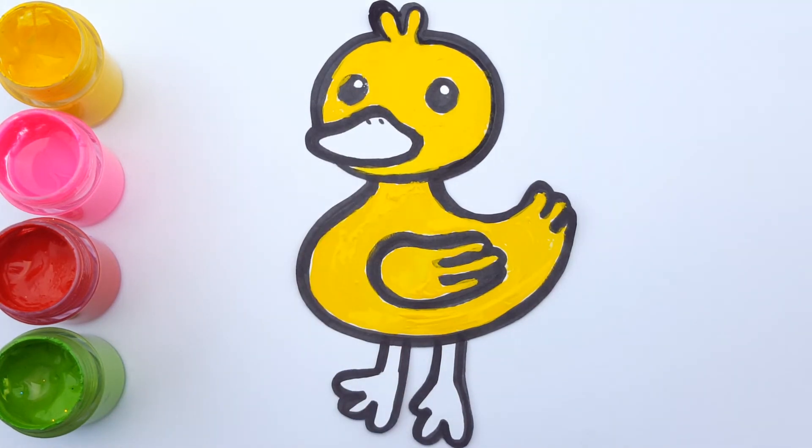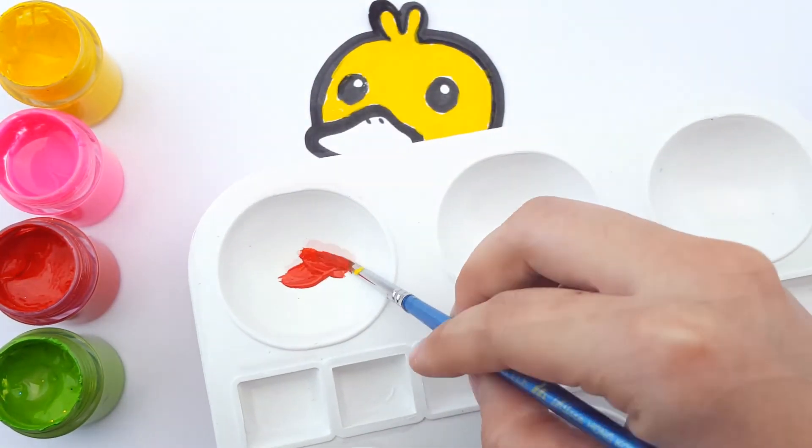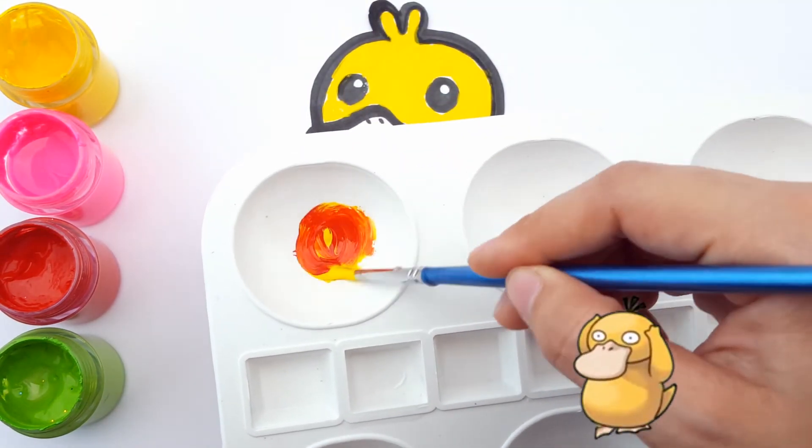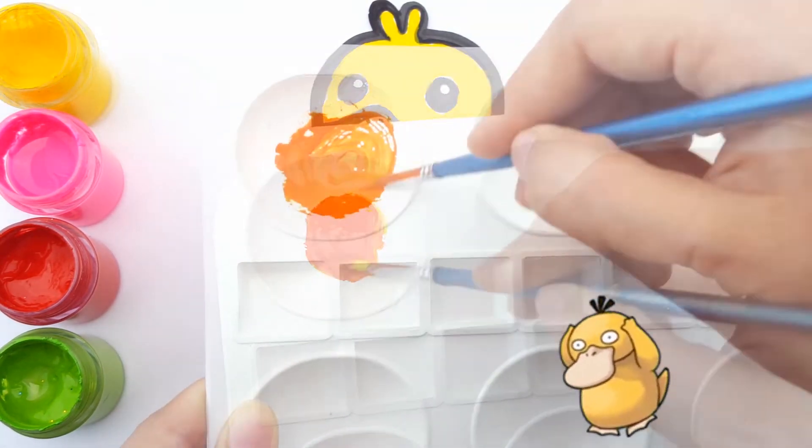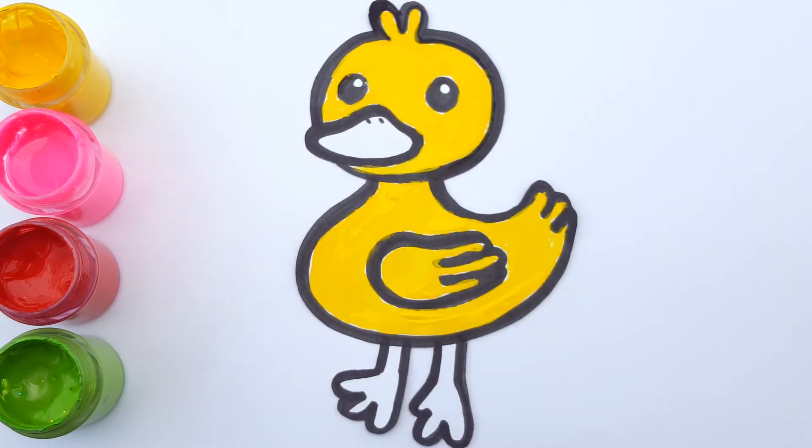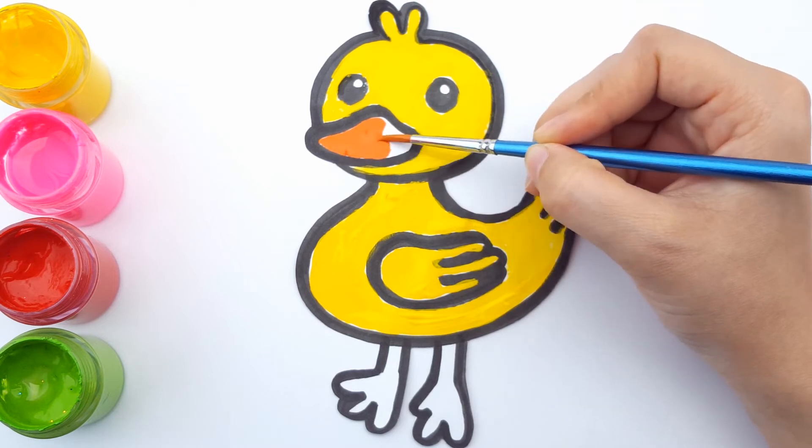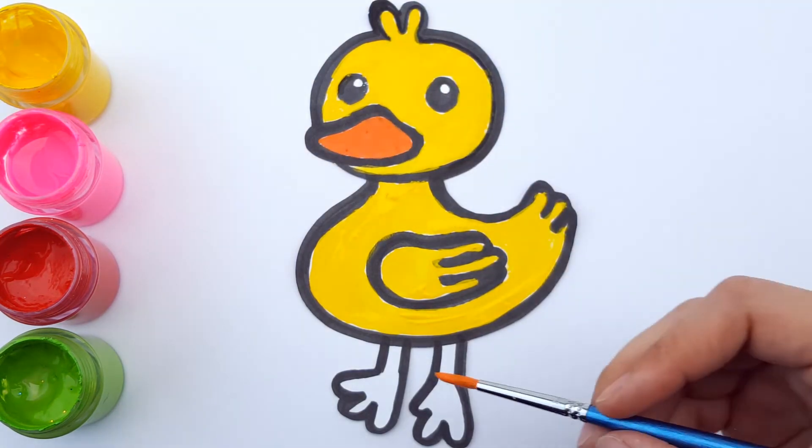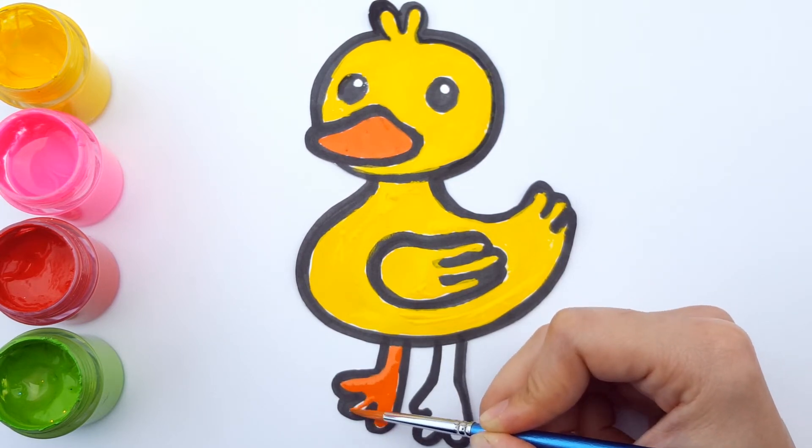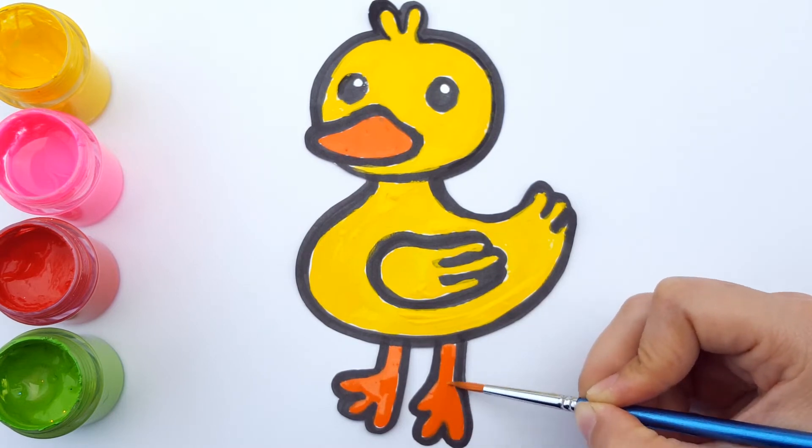Now to make orange, we're going to mix red and yellow. Let's color our ducky friend's beak and feet. Look at it! Ta-da!